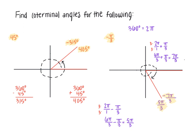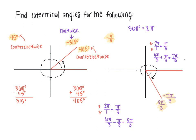To summarize: coterminal angles are angles that share the same terminal side. You can always find two coterminal angles — one coming in the same direction as the original angle (both counterclockwise), or one coming from the opposite direction. I did the same with the radian measurement, except instead of using degrees I added or subtracted 2π depending on whether I was looking for the angle from the same direction or the opposite direction.